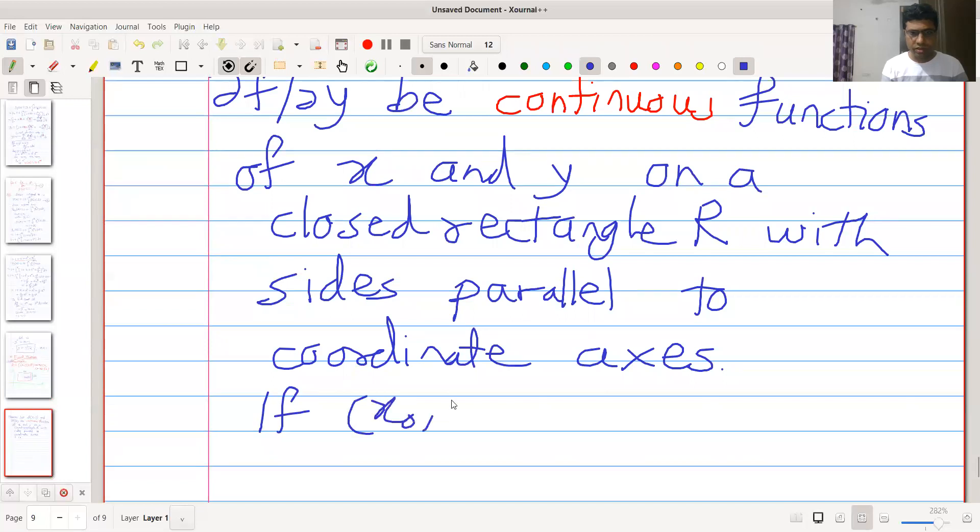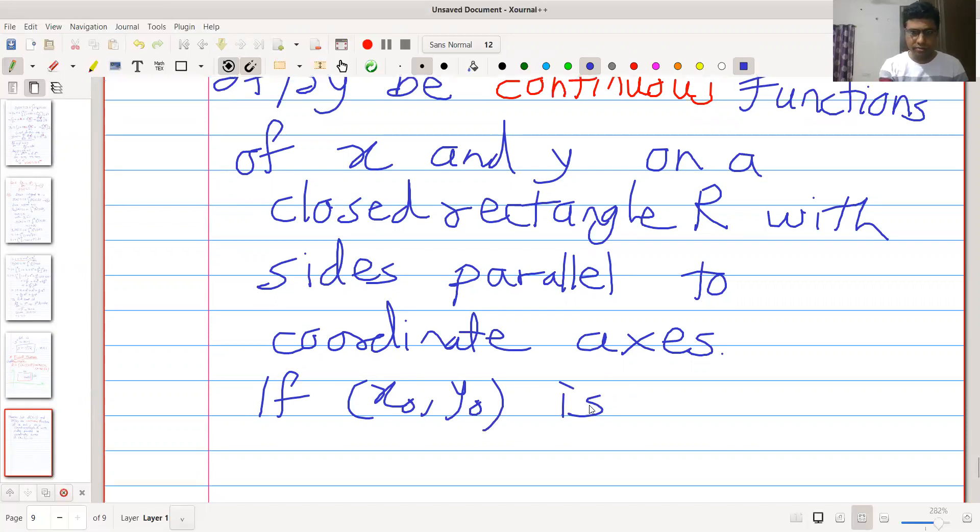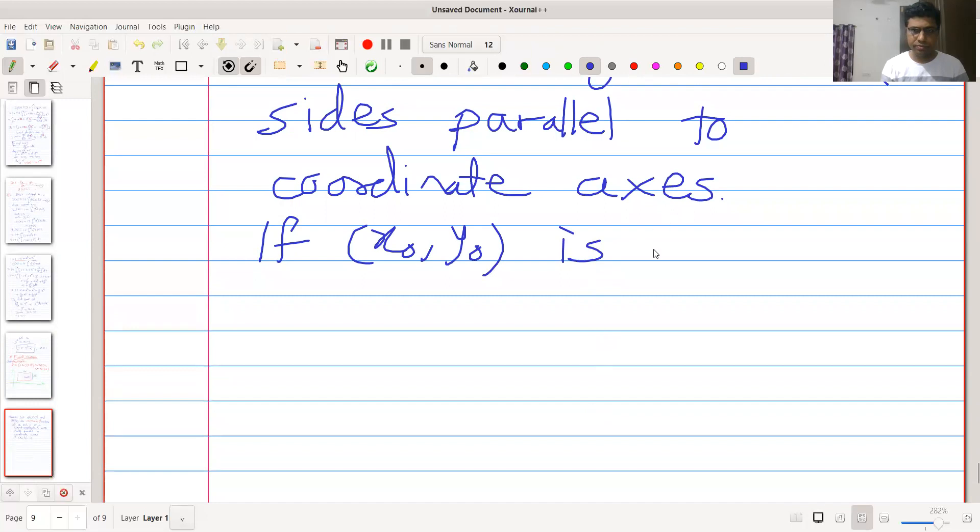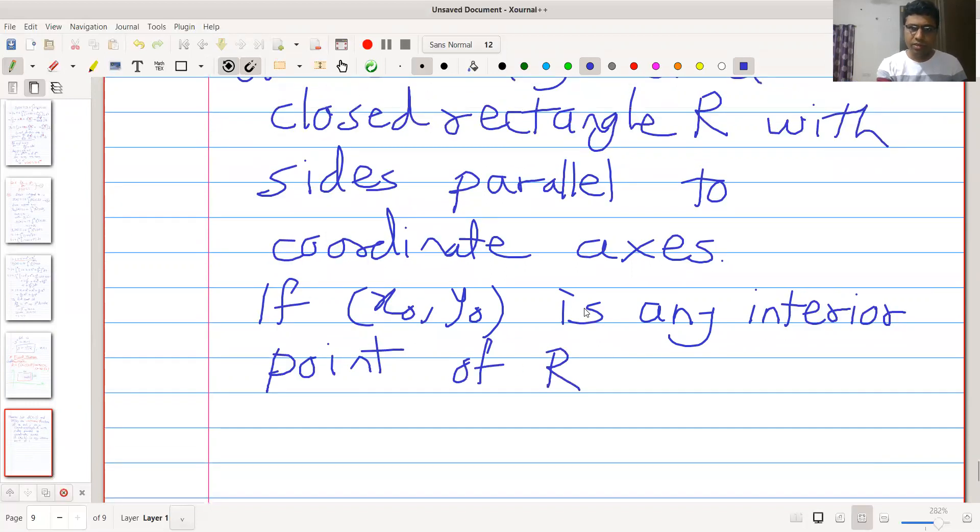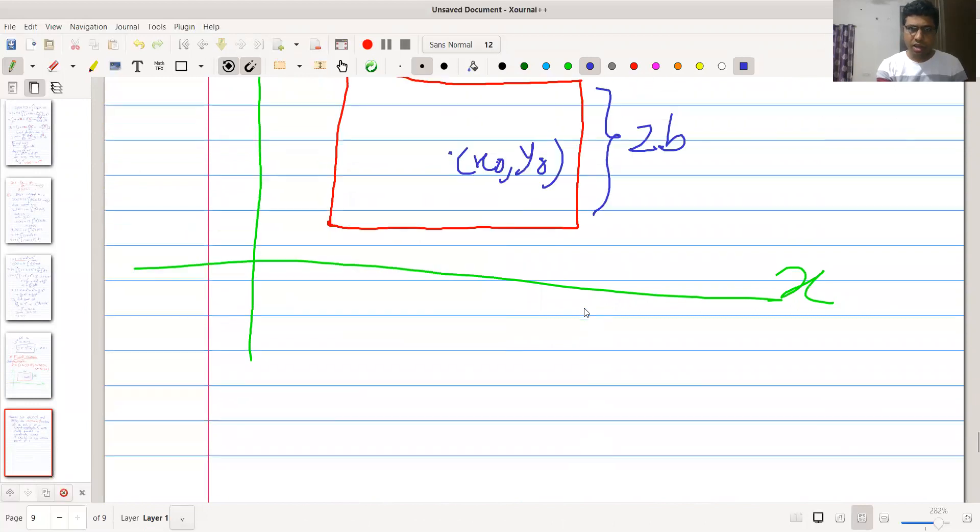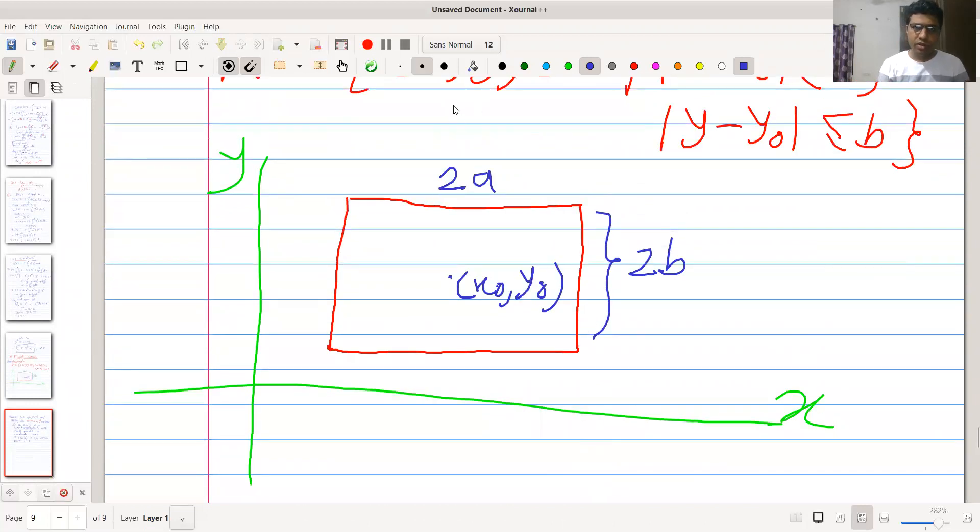If (x₀,y₀) is any interior point of R. Interior point means the point should be in R and it should not be on the boundary. So this should be interior point.